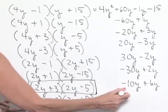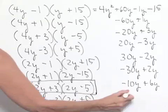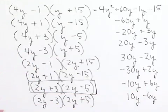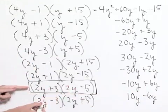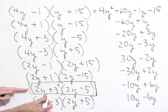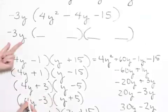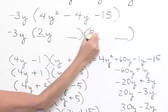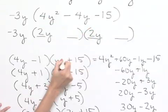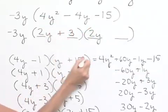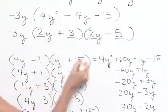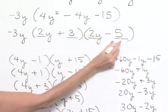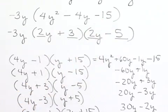Just to double-check: the last combination would give 10y minus 6y, which is positive 4y — not negative. So the working combination is 2y plus 3 times 2y minus 5. We go back to our problem with negative 3y as our common factor, and write in 2y times 2y for our 4y squared, with plus 3 and minus 5 to give the correct last term of negative 15, outer term of negative 10y, and inner term of positive 6y.